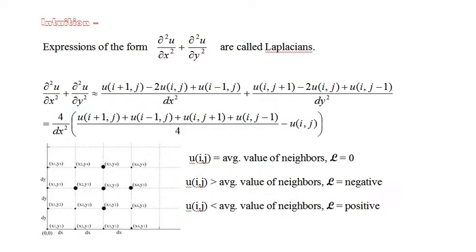Looking at the FDM substitution for the Laplacian, its value at grid point (i, j) is a multiple of the average value of the variable at points neighboring (i, j) minus the value at (i, j). So when u(i, j) is approximately equal to the average value of its neighbors, the Laplacian is negative and the viscosity term exerts a negative force at (i, j). When u(i, j) is less than the average value of its neighbors, the viscosity term is positive and exerts a positive force at (i, j).